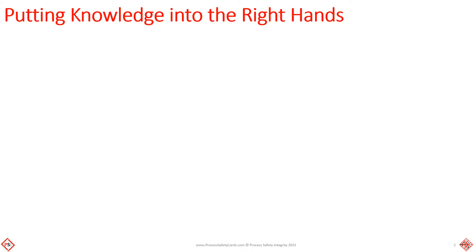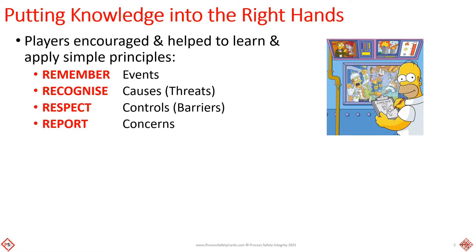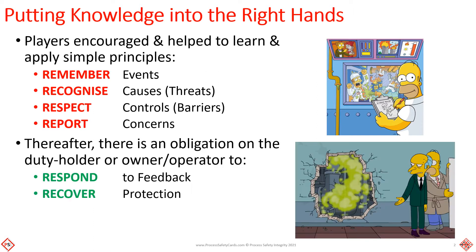Process safety cards put knowledge into the hands of those who may contribute to or be affected by loss of containment events. Players are encouraged and helped to learn and apply simple principles: Remember events. Recognize causes or threats. Respect controls and barriers. And report your concerns. There is then an obligation on the duty holder or owner operator to respond to feedback and promptly recover the protection.